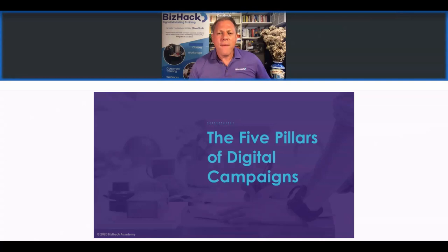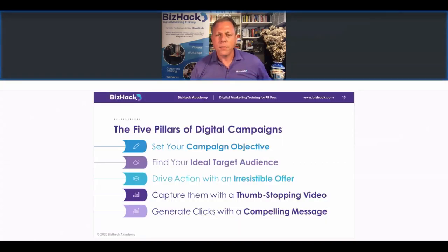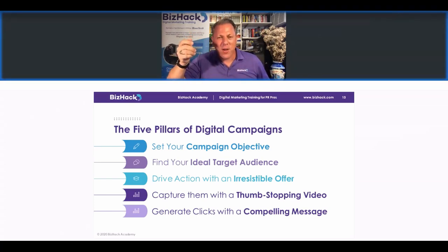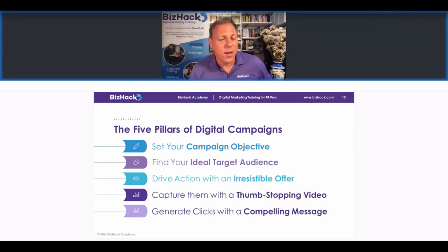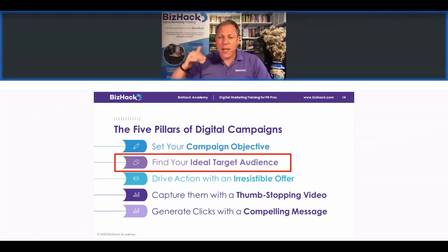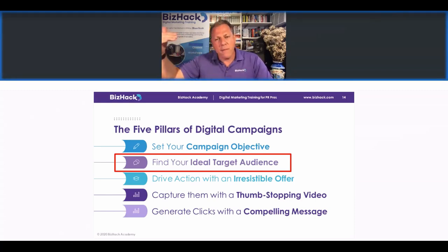The foundation of what we're discussing today are the five pillars of digital campaigns — BizHack's methodology for teaching digital marketing. Those five pillars are: set your campaign objective, find your ideal target audience, drive them to act through an irresistible offer, capture their attention with a thumb-stopping video — so called because you stop scrolling on your Facebook feed to watch — and generate clicks with a compelling message. Today we're going to focus on pillar number two: finding your ideal target audience.